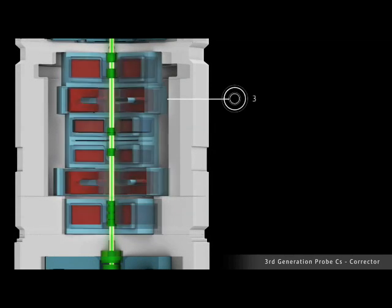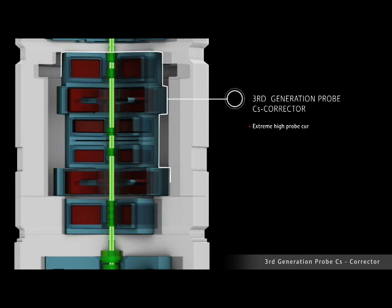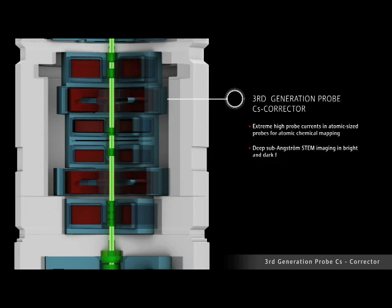The D-core probe CS-corrector enables extreme high probe currents in atomic sized probes for atomic chemical mapping and deep sub-angstrom STEM imaging in bright and dark field applications. Atomic resolution imaging and chemical mapping across the large high-tension range of the Titan is achievable with optimum results for different materials with this technology.